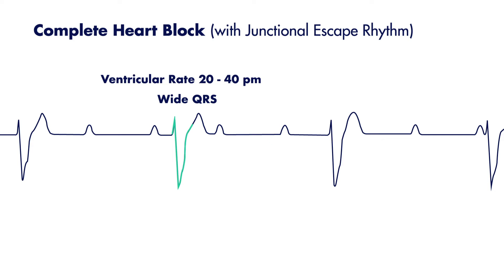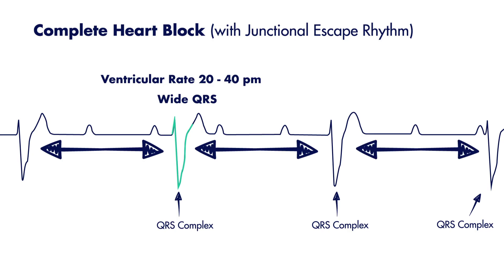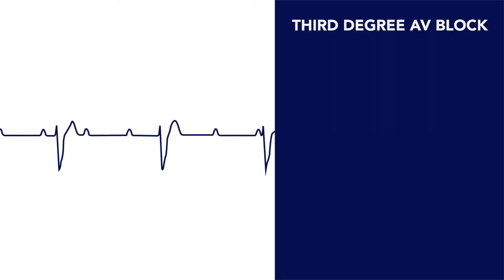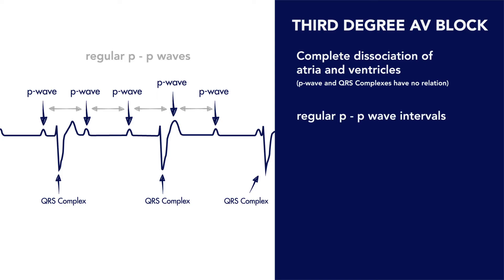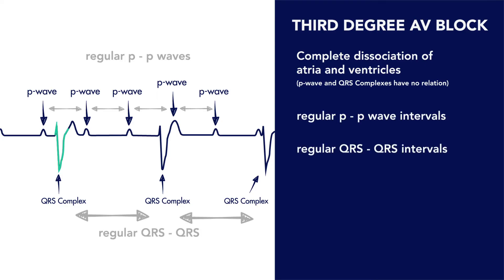Regardless of whether or not the ventricles are conducting through a junctional or ventricular focus, like the P waves mentioned earlier, you can also march out QRS complexes at regular intervals through your cardiac strip. So in summary, with complete heart blocks you'll see a complete dissociation with electrical activity from the atria and ventricles. Although P waves occur at regular intervals and QRS complexes also occur at regular intervals, they do so independently of one another, and so there is no association to when a P wave is followed by a QRS complex.